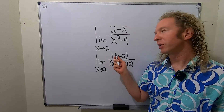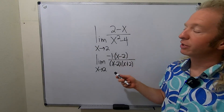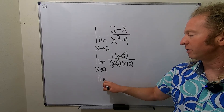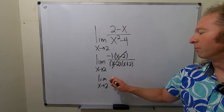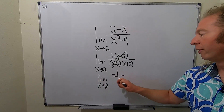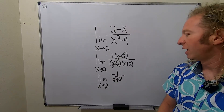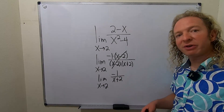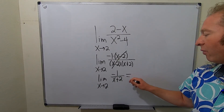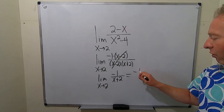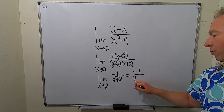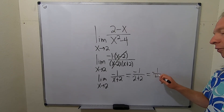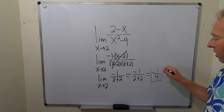We can check this: negative 1 times x is negative x, and negative 1 times negative 2 is positive 2. Now these (x minus 2) terms cancel. So we can write the limit as x approaches 2 of negative 1 over (x plus 2). Now we can plug in: dropping the limit sign, we get negative 1 over (2 plus 2), which is negative 1 over 4. That's the final answer.